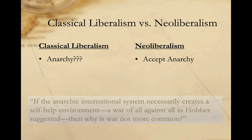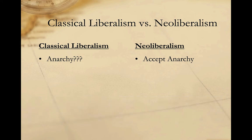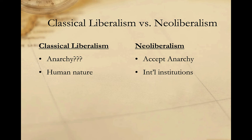They asked an important question: if the anarchic international system necessarily creates a self-help environment, a war of all against all as Hobbes suggested, then why is war not more common? In answering that question, they emphasized the importance of international institutions in structuring the international environment in ways that mitigate against anarchy. While classical liberalism emphasized the centrality of human nature and argued that conflict was largely the result of bad actors or the failure of cooperation, neoliberals accepted the realist assertion regarding the nature of the international system — that it is anarchic and that states will pursue the national interest. However, neoliberals assert that international institutions can help limit or shape that anarchy and set up conditions under which cooperation may be more possible. Because of this, neoliberal IR theory is sometimes referred to as neoliberal institutionalism, a name that emphasizes the central importance neoliberals place on global institutions.